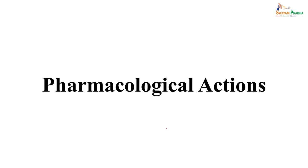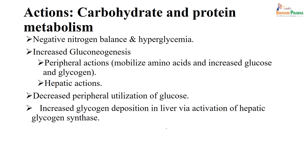Regarding pharmacological action on carbohydrate and protein metabolism: glucocorticoids cause a generalized negative nitrogen balance and hyperglycemia. Whenever you give a steroid, there are chances of hyperglycemia — because it increases gluconeogenesis. In the periphery, it mobilizes amino acids and increases glucose and glycogen, also through hepatic action. It also causes decreased utilization of glucose, which is why blood glucose levels are increased. It increases glucose deposition in the liver via activation of hepatic glycogen synthesis.